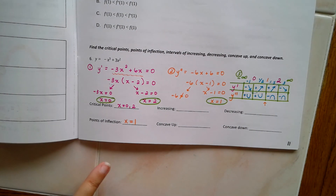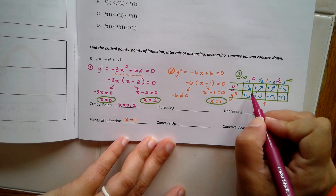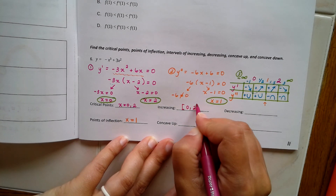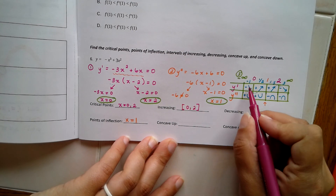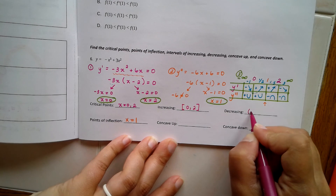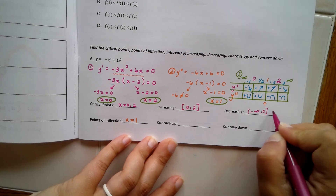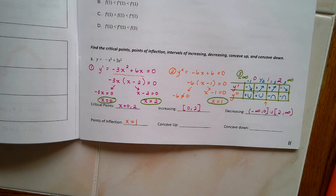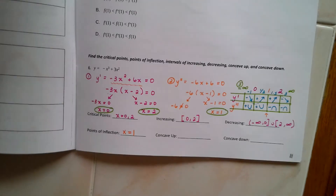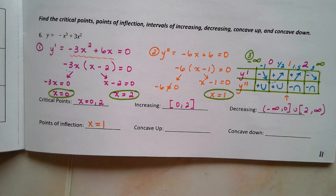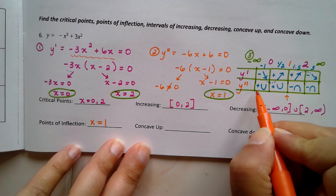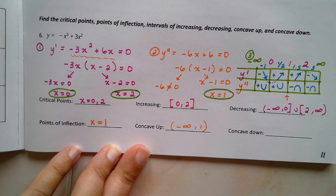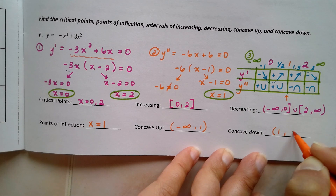To list increasing versus decreasing: increasing is where the slope is positive, so that's the interval from zero to two, using closed brackets. Decreasing is at the beginning and the end where the graph is going downhill. I use closed brackets at zero and two, and only use open brackets when the interval includes infinity. For concavity, I focus on the second derivative row: the function is concave up from negative infinity to one, and concave down from one to infinity — always using open parentheses for these intervals.